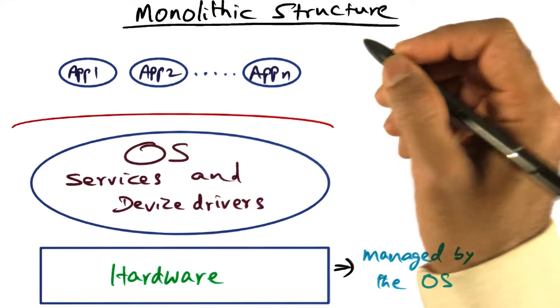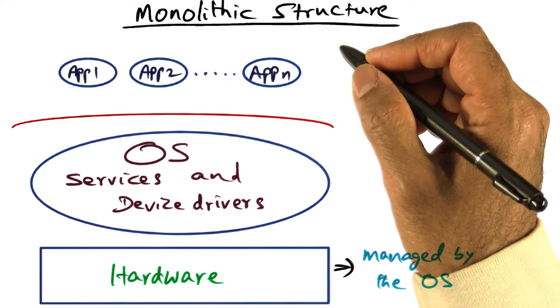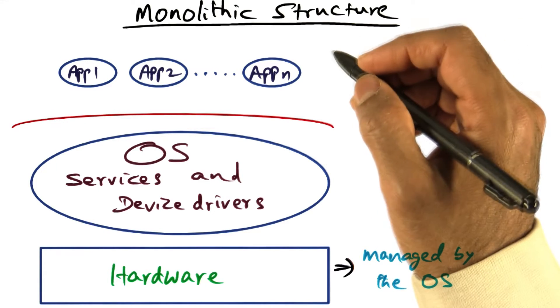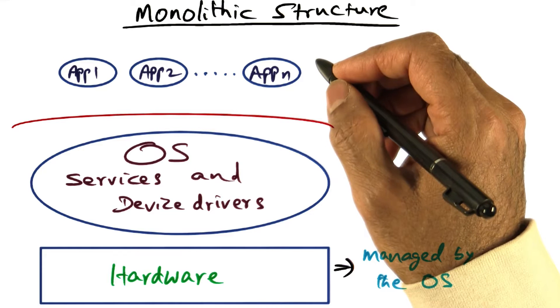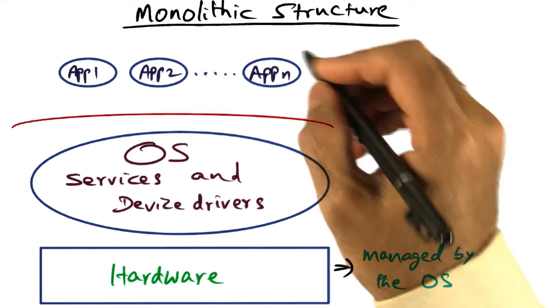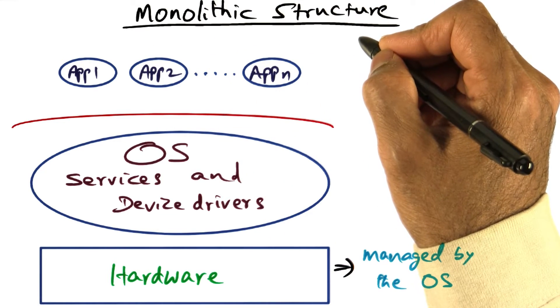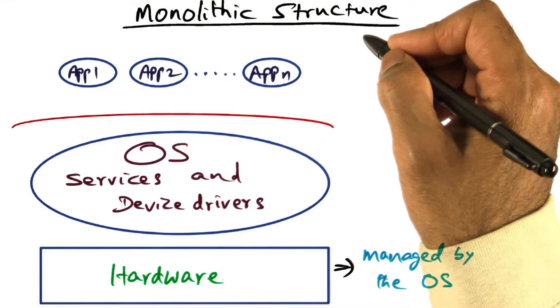Now let's talk about different approaches to operating system structuring. The first structure I'll introduce to you is what we will call the monolithic structure.